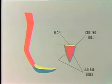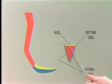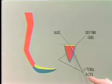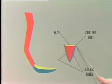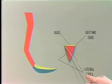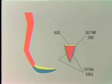The main divisions of the blade of the instrument are the lateral side and the face of the instrument, as may be seen in this cross-section. Generally the lateral side and the face of the instrument meet in what we call the cutting edge. The angle formed between the lateral side and the face is generally about 70 degrees.